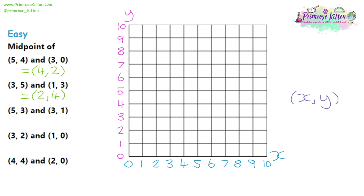Question 3 has (5, 3) — 5 across and 3 up — and (3, 1) — 3 across and 1 up. Join them up with a straight line and find the coordinate in the centre. Look at the values below for the x-axis, which is a 4, and to the left for the y-axis, which is 2. So (4, 2) is directly in the middle of (5, 3) and (3, 1).